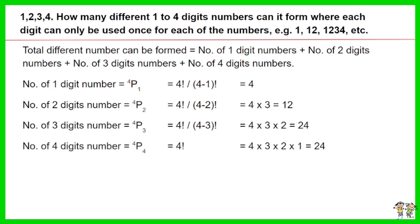The total different number formed equals 4 plus 12 plus 24 plus 24. The answer is 64.